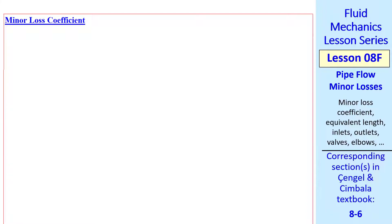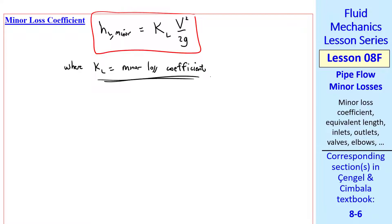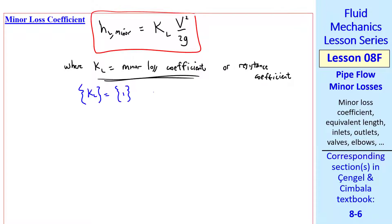The more popular way is with the minor loss coefficient. We define HL minor as some coefficient kl times v squared over 2g, where kl is the minor loss coefficient, which some authors call the resistance coefficient. The dimensions of kl are 1, it's dimensionless and unitless. I do some research in the HVAC industry, where they use C0 instead of kl, but they mean the same thing. I won't use this notation as resistance coefficient, but there is an analogy.